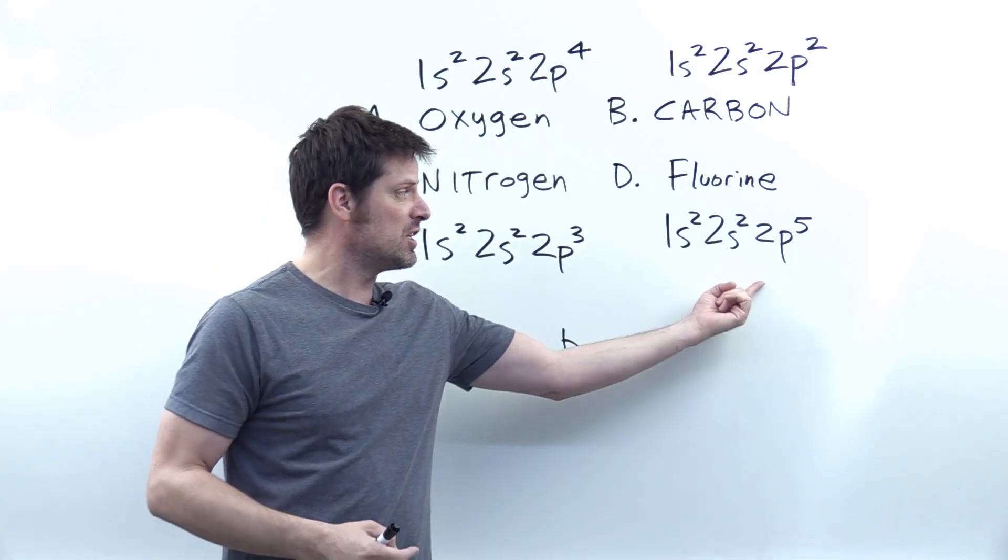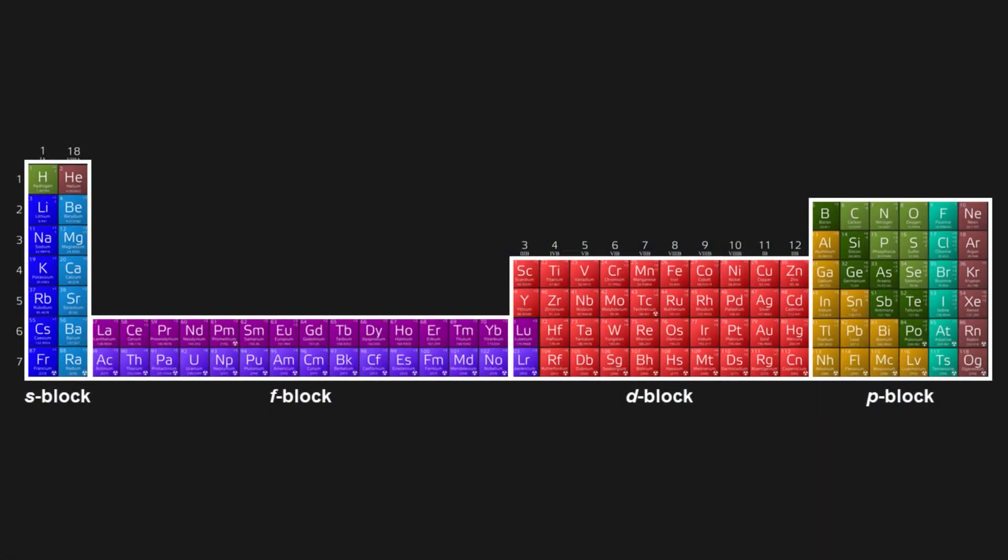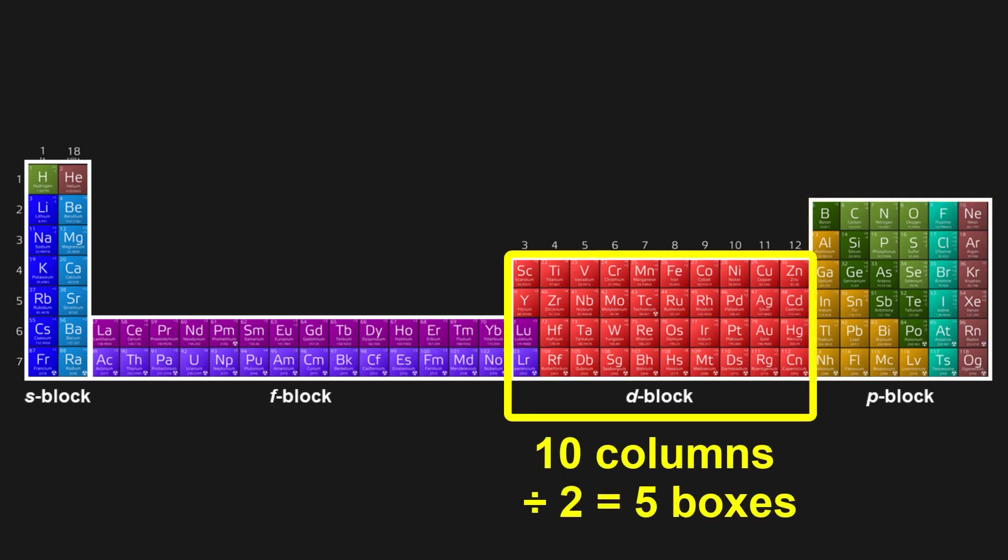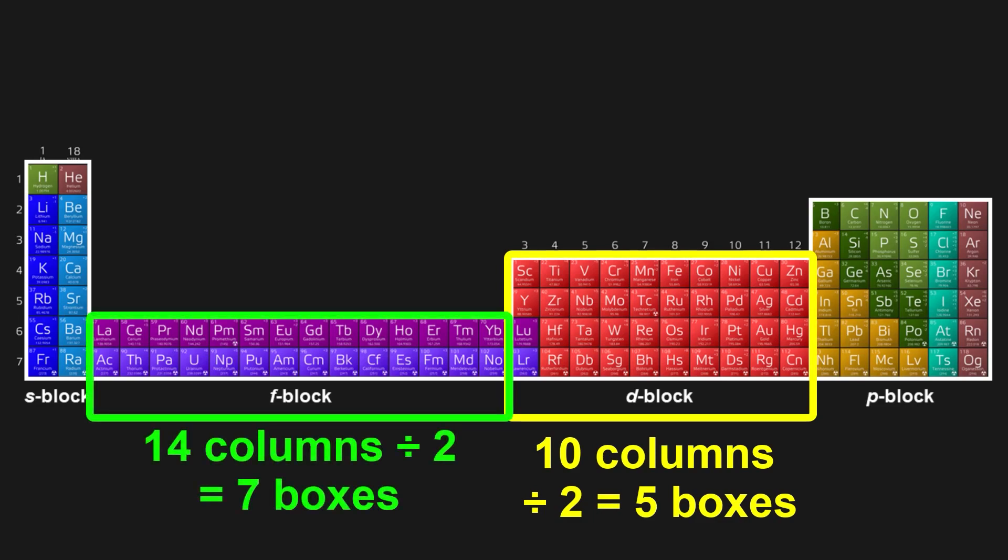So what do we do with a p shell like a 2p shell? Well, I ask you looking at this figure, how many columns are there in the p block? Yeah, you can see there are six. So I take the number of columns six and divide it by two and get three. Hence, I would write down three boxes for my p shell. Now, if you do the same process for any d orbitals, you would get five boxes, and for f orbitals, you would get seven.